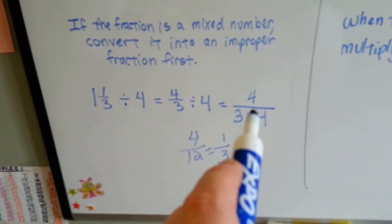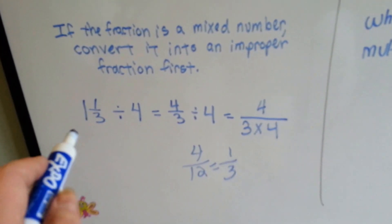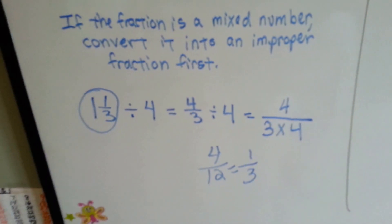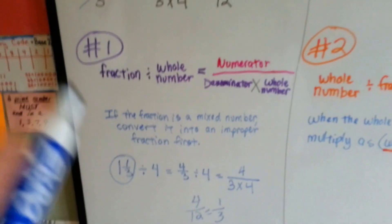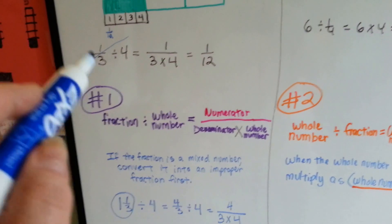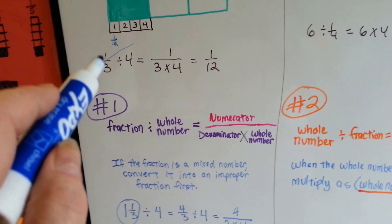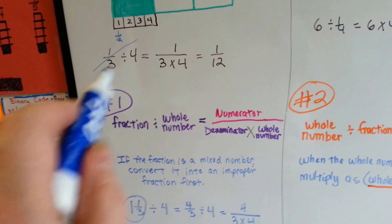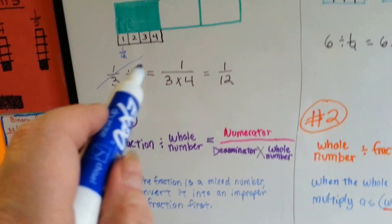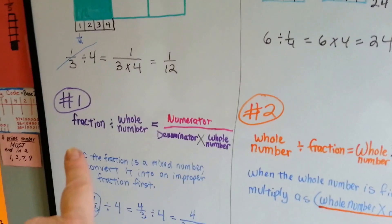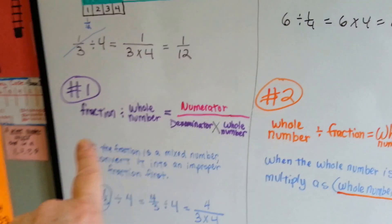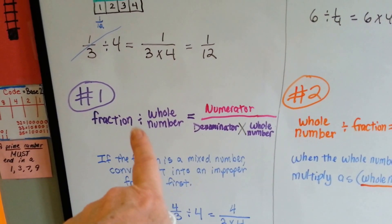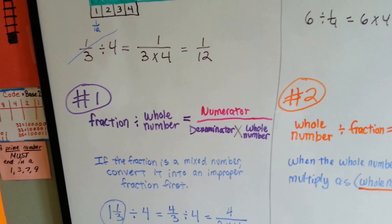We did the exact same thing but first we had to turn this into an improper fraction. So it works even if you have an improper fraction. When the fraction is first, think of it as the numerator over the denominator times the whole number. That's our first rule — if you could write that into your notes, it would be very helpful when you go to do your work.